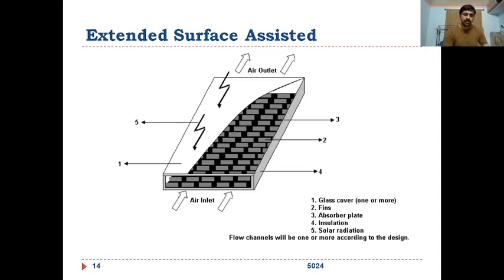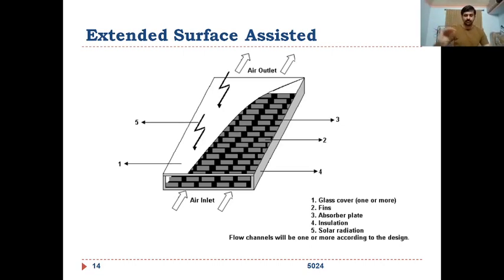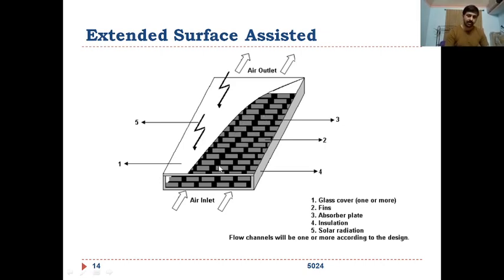In the extended surface assisted type, there are a number of protruded or projected surfaces in the air channel, called fins or extended surfaces. Convection heat transfer is directly proportional to the surface area over which heat is transferred. By incorporating these fins, the surface area in contact with the air is increased, thereby increasing heat transfer from the absorber plate to the air.